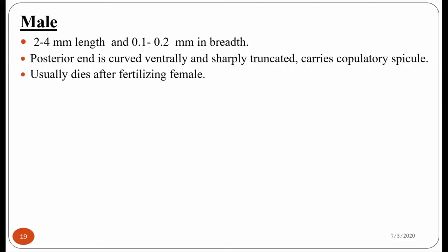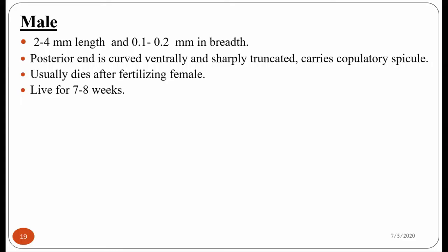This is different from other worms you may have studied, like Strongyloides stercoralis, Trichuris trichiura, Ascaris lumbricoides, and hookworm. In Enterobius vermicularis, the adult male worm dies immediately after mating with the female worm. The adult male worm of Enterobius vermicularis can survive for about 7 to 8 weeks inside the human body.